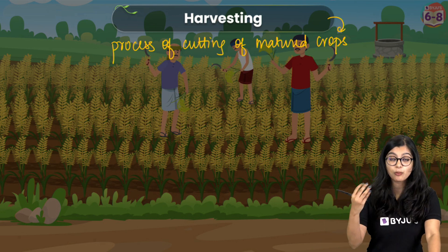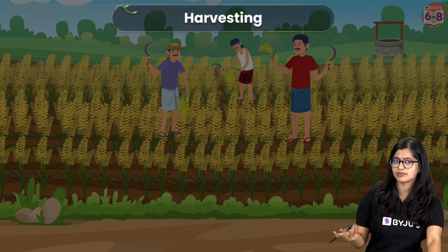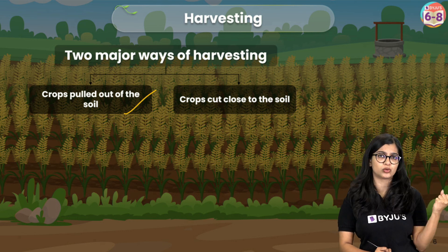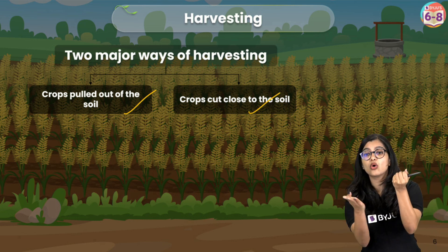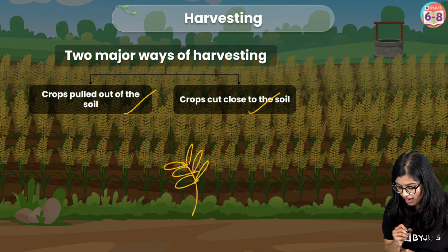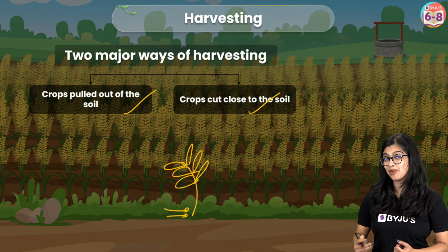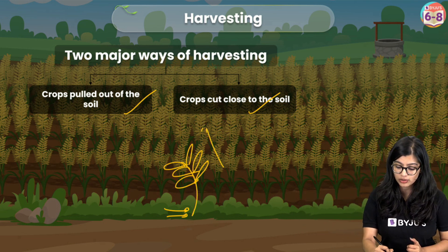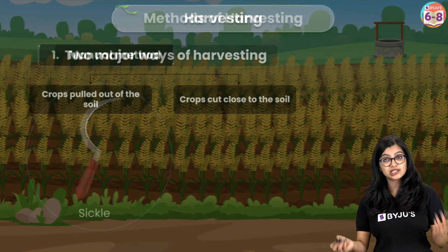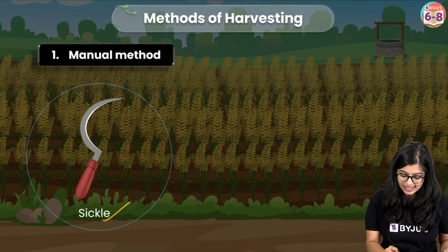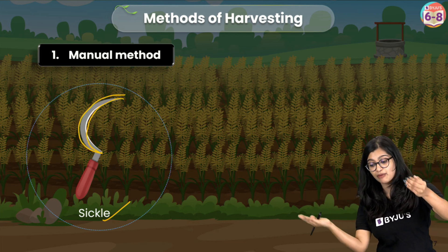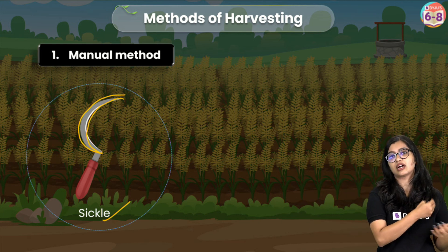There are two ways to cut matured crops. The simple way is to directly pull the crop from the soil — uproot it. The second way is to cut it close to the soil without uprooting it. Now how do we cut it? We have tools that help us. The Indian farmer normally uses a sickle — an axe-like instrument with a crescent moon-like structure, which helps cut close to the soil from the bottom.